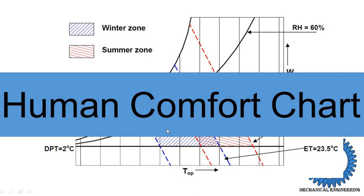ASHRAE means American Society of Heating, Refrigeration and Air Conditioning Engineering. They collected data from a number of people sitting at different temperatures and different relative humidity levels — some feeling comfortable, some not — and after collecting their data, they made one chart known as the human comfort chart.